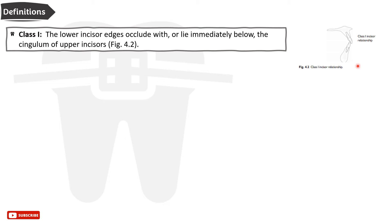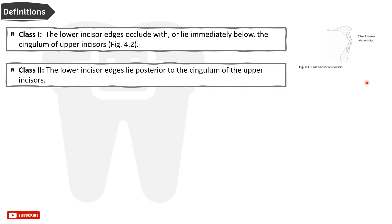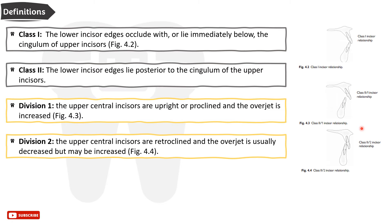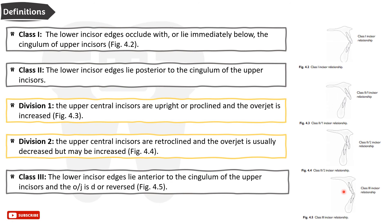In Class 1, the lower incisor edge occludes with or lies immediately below the cingulum of the upper incisors. In Class 2, the lower incisor edge lies posterior to the cingulum of the upper incisors and has two divisions. Division 1: the upper incisors are upright or proclined and the overjet is increased. Class 2 Division 2: the upper central incisors are retroclined and the overjet is usually decreased but may be increased.